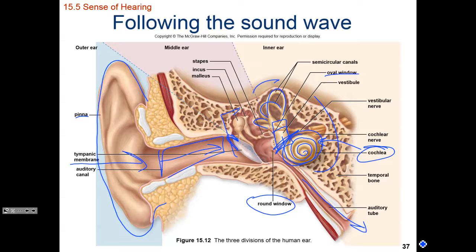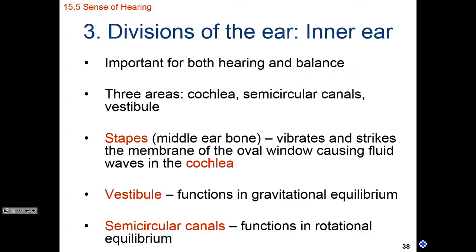When looking at the three semicircular canals, think of an X, Y, and Z axis — all three canals are perpendicular, or 90 degrees from each other, operating in three dimensions. This aids us with dynamic equilibrium, also known as rotational equilibrium. The stapes presses against the oval window, fluid waves move through the cochlea that we interpret as sound, while the vestibule aids us with static equilibrium — knowing our orientation in space.